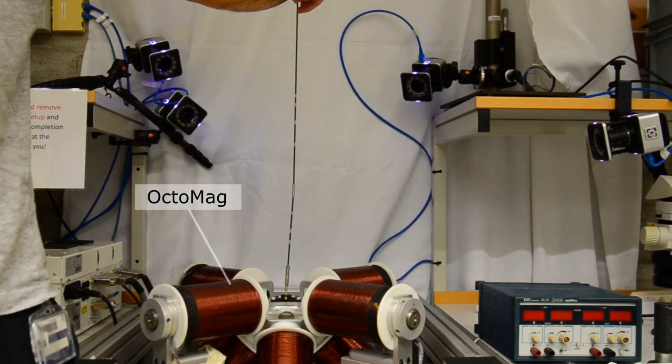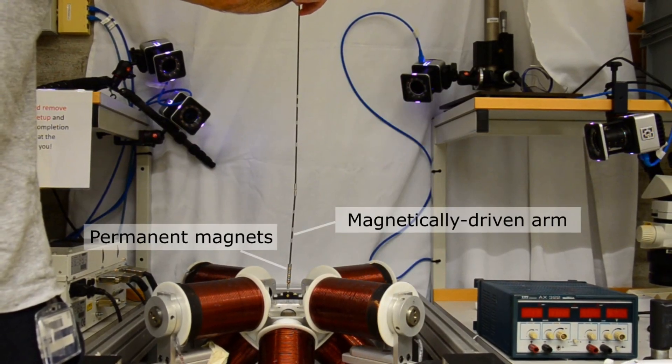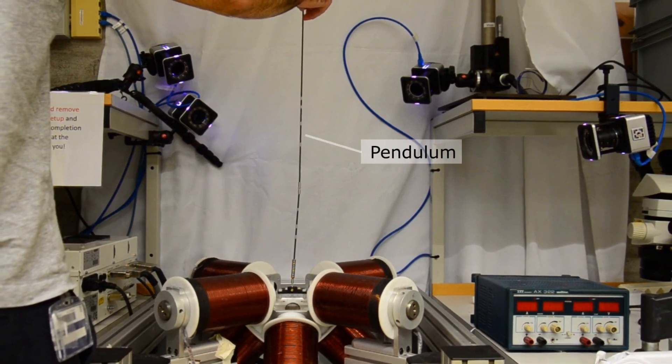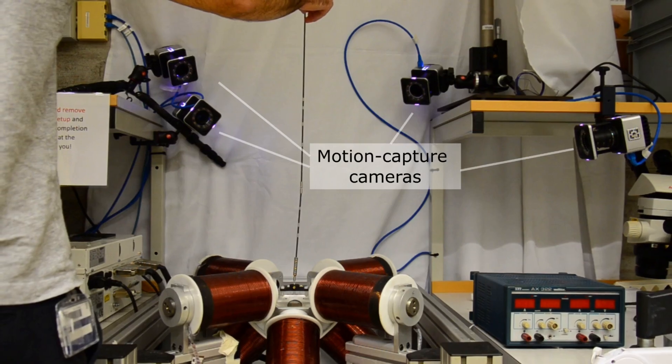The setup consists of the Octomag electromagnetic navigation system, a magnetically driven arm, the pendulum, and our motion capture system, which you can think of as an indoor GPS.